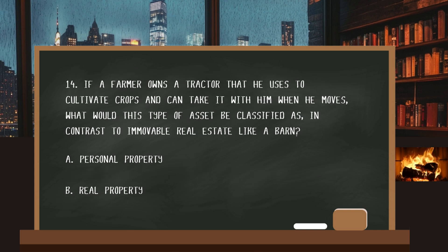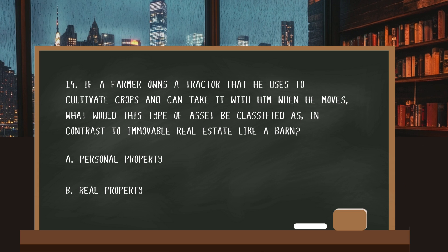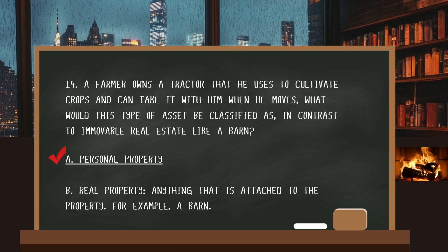Number fourteen. A farmer owns a tractor that he uses to cultivate crops and can take it with him when he moves. What would this type of asset be classified as, in contrast to immovable real estate like a barn? The answer is A: personal property. Real property is anything that is attached to the property — for example, a barn.